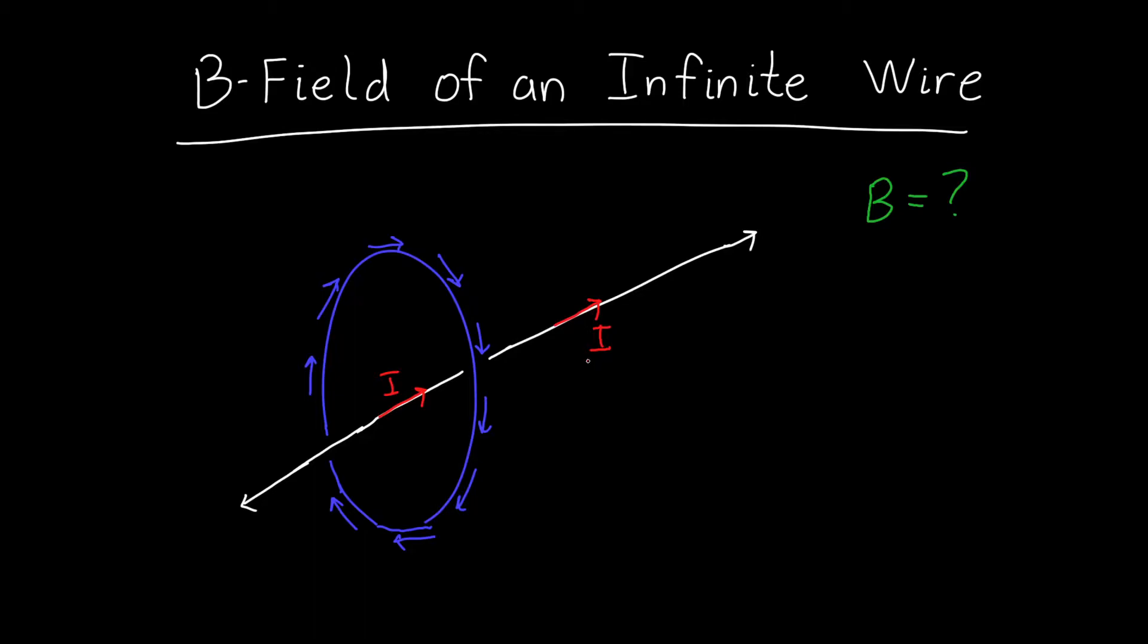And it's carrying a current I. What we want to know is the magnetic field at some distance away from this wire, at some radius r away from it. Because this problem has infinite symmetry, we can use Ampere's law to solve it.